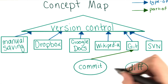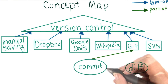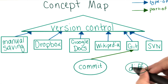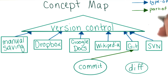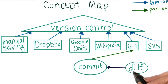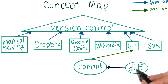So let's just connect it with commit. The relationship between diff and commit isn't really type of or part of, so we'll need a new color for it. Since diff takes two commits and compares them, we're going to call this the operates on relationship.